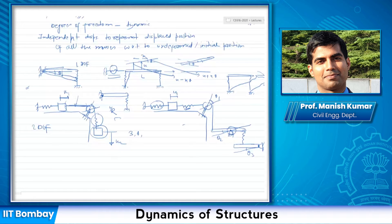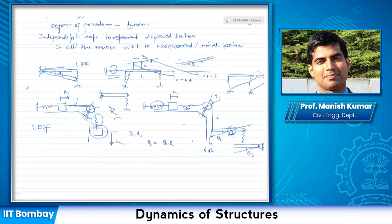How are they related? Whatever is the displacement through theta1 — let us say it is rotating by theta1 — then theta1 times r is the downward displacement, where r is the radius of the pulley. And theta2 would be theta1·r divided by the length l here. So theta1 and theta2 are not independent anymore. That is why I need only three degrees of freedom.